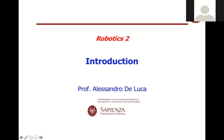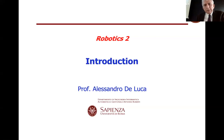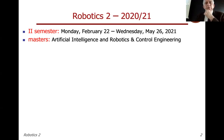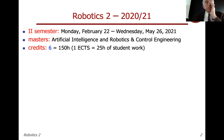Welcome to the first lecture of Robotics 2. We will experiment with a different way of teaching this course. It is intended for two study programs: the Master's in Artificial Intelligence and Robotics, and the Master's in Control Engineering. There are six credits for this course, and one European credit is equivalent to 24-25 hours of student work, so six credits means 150 hours of your work.